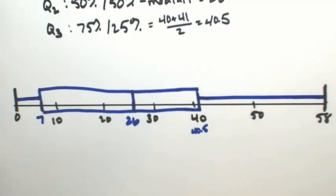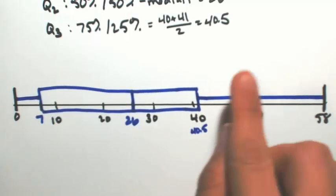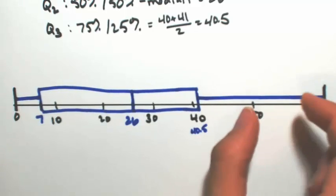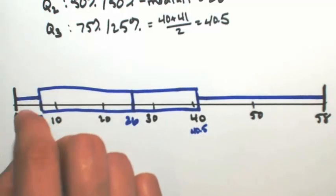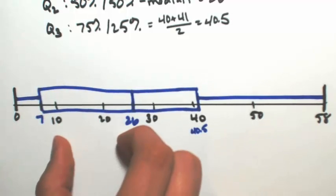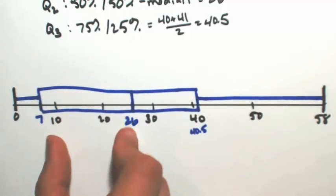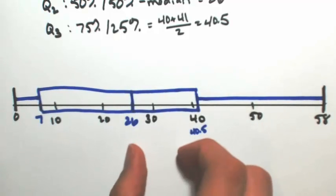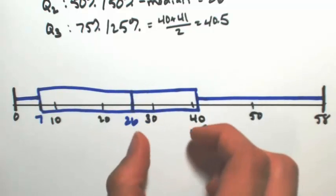So basically what this box is telling us is by this really long whisker on the right side here, that there's not many numbers that are between 40 and 58. So this variation is pretty large. Between 0 and 7, there's a few more numbers. So the variation is not as big. And between the 7 and the 26, because that's kind of long, we have some variation in there. So basically between 26 and 40.5 is where we're going to have most of our data, because that's a little more compressed. So more data lies in between there.